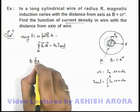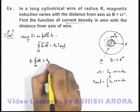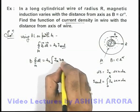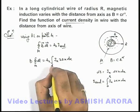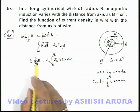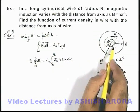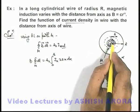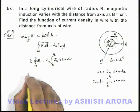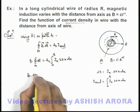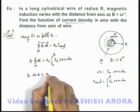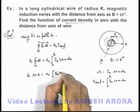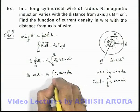Integration for the closed path dl for path M is μ₀ times integration of J(x) · 2πx dx. We can write this as 2πr because the radius of this path is r. So B multiplied by 2πr equals μ₀ times integration of J(x) · 2πx dx from 0 to r.